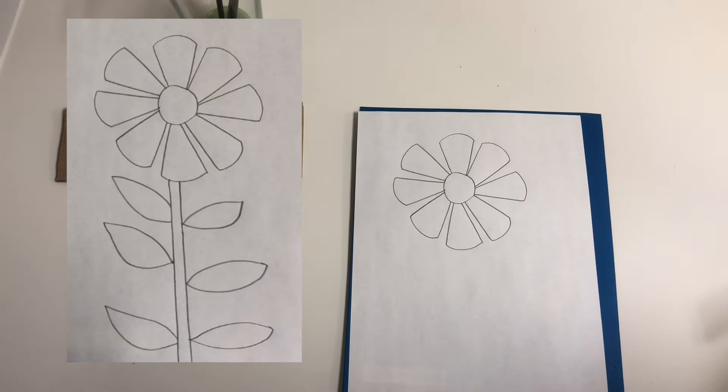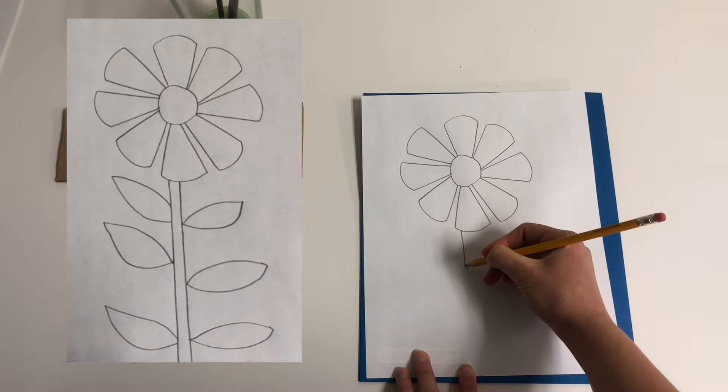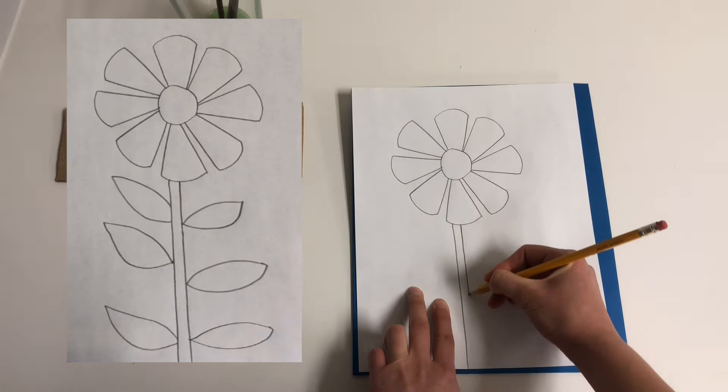Okay, so now I have my flower. The next step I'm going to do is I am going to make a stem for the flower. So the stem is going to be a straight line going down to the bottom of my paper and another straight line that runs parallel just like so.